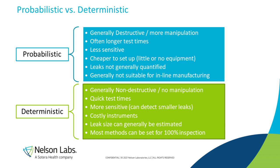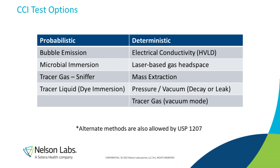Probabilistic and deterministic methods are really complete opposites. Where probabilistic methods are destructive, deterministic methods are non-destructive. Where probabilistic methods are slow and less sensitive, deterministic methods are fast and more sensitive. Where probabilistic methods are cheaper to set up, deterministic methods require costly instruments. And where probabilistic methods can't tell you what a leak size is, deterministic methods can often estimate a leak size based on numerical results. Nelson Labs offers bubble emission, mass extraction, dye immersion, and bacterial immersion testing.